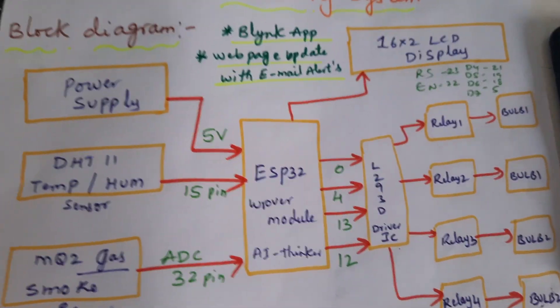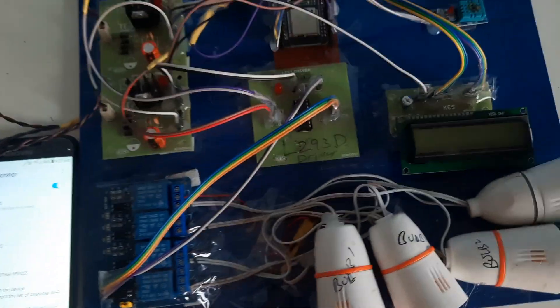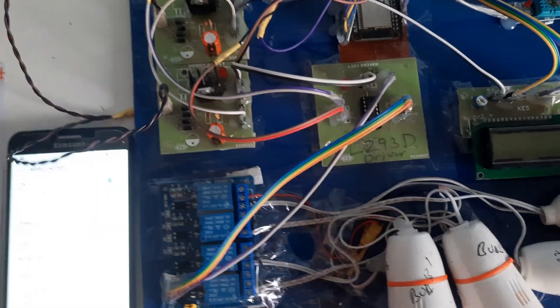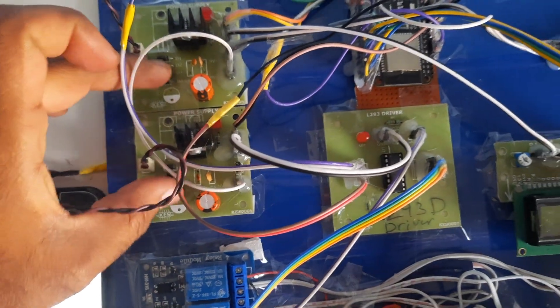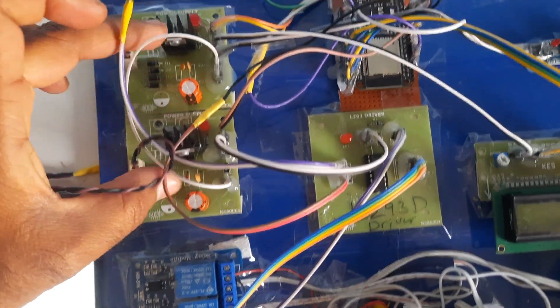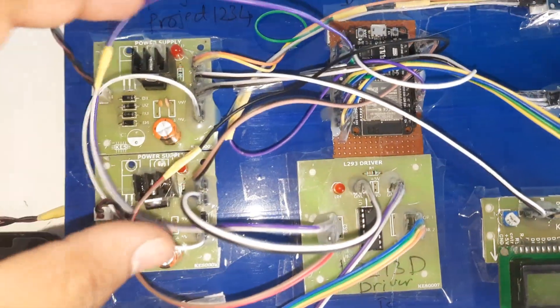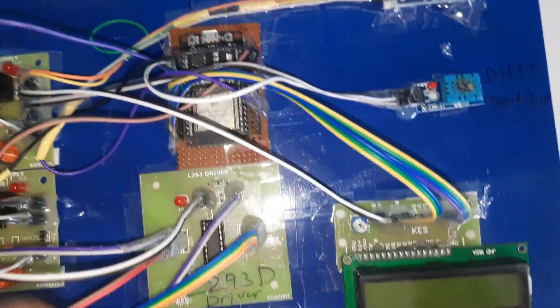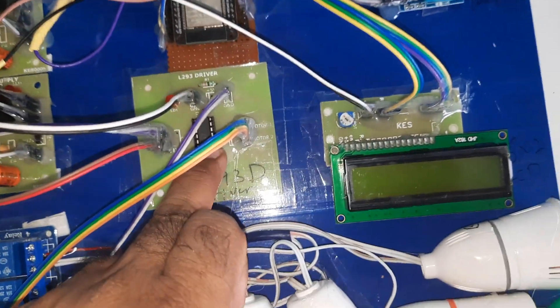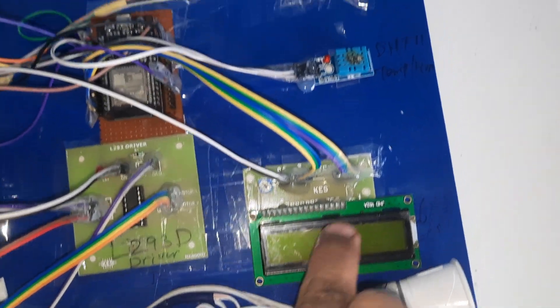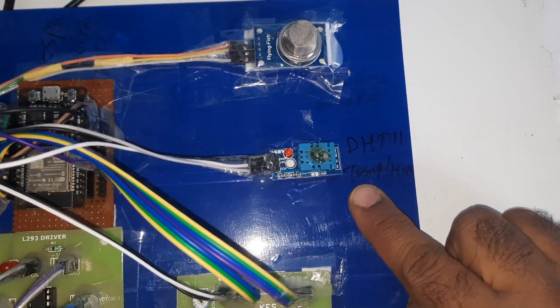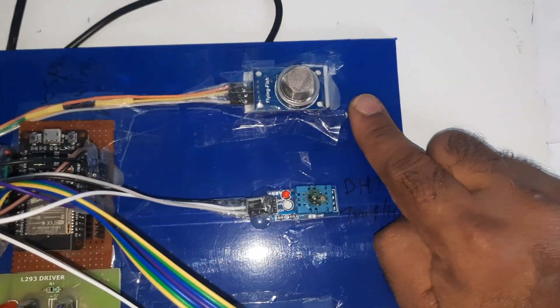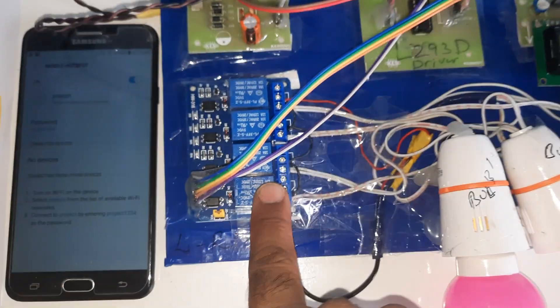This is our block diagram. Now let's look at the hardware. We are using a bridge rectifier, filter capacitor, 7805 voltage regulator, LED, ESP32 AI Thinker board, L293D driver IC, 16x2 LCD display, DHT11 temperature and humidity sensor, MQ2 gas sensor smoke sensor, and four relay coils for bulb 1 and bulb 2.